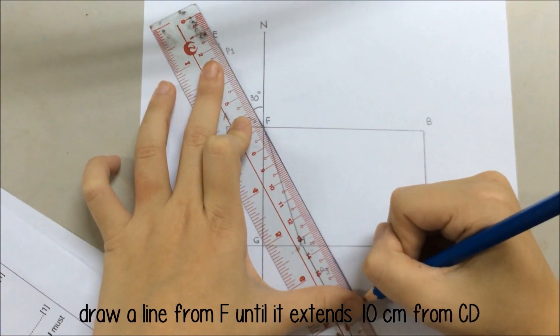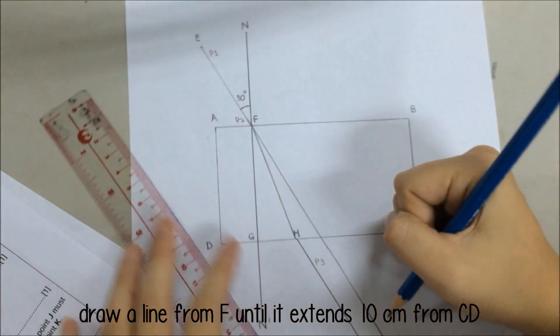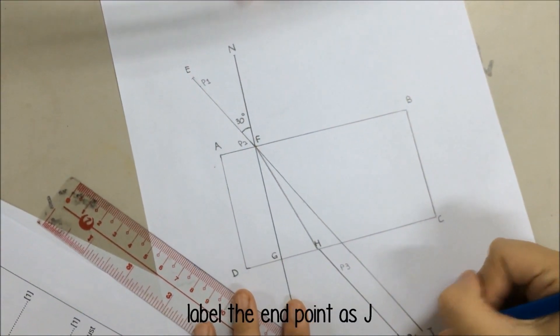Step 10: Draw a line from point F until it extends beyond line CD. Label the end point as J.